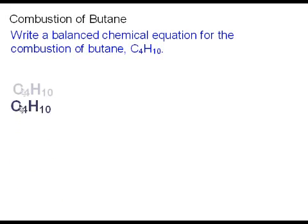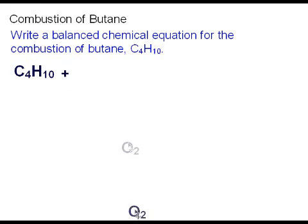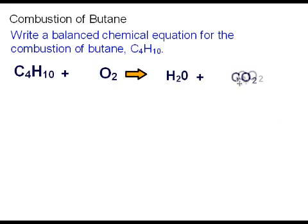So since this is a combustion reaction, we need to remember the reactants and the products of a combustion reaction. We're going to have butane, C4H10, but also we have oxygen gas, O2. And the products of a combustion reaction are always water, H2O, and carbon dioxide, CO2.